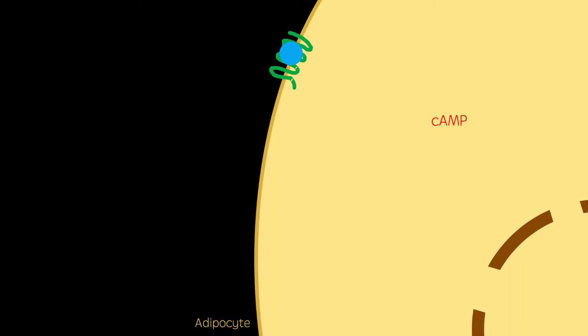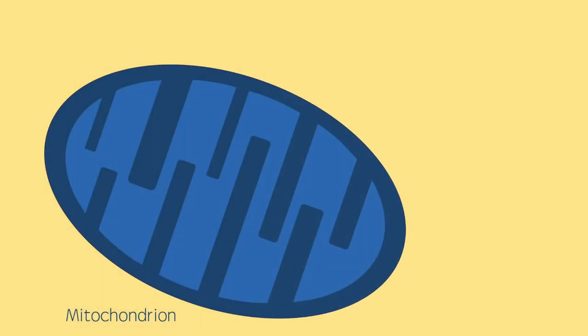Cyclic AMP goes on to activate protein kinase A. Protein kinase A enters the nucleus and enhances the expression of UCP-1. UCP-1, or uncoupling protein 1, inserts itself into the membrane of mitochondria and allows the proton gradient to dissipate without storing the energy as ATP. This is known as thermogenesis, as the energy dissipates as heat, which in turn decreases the mass of the adipose tissue, contributing to weight loss.